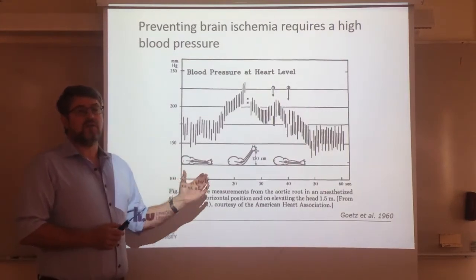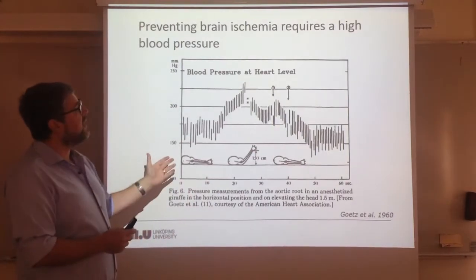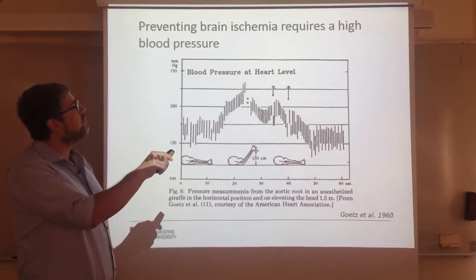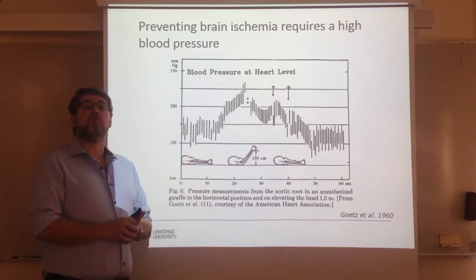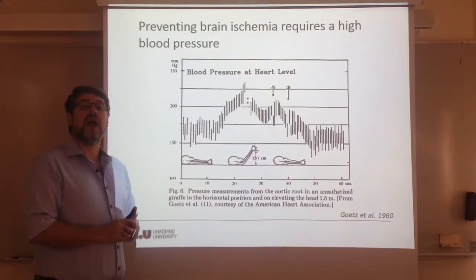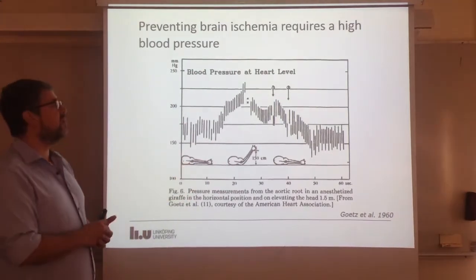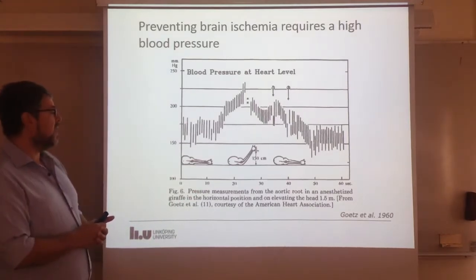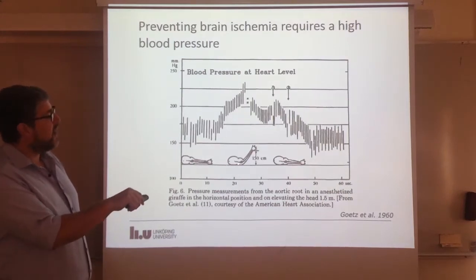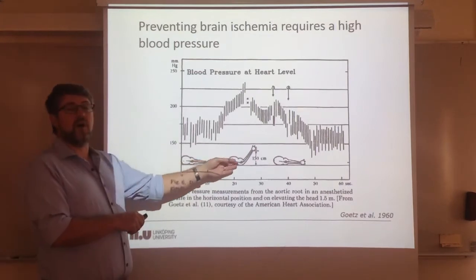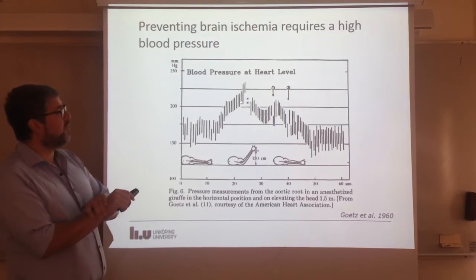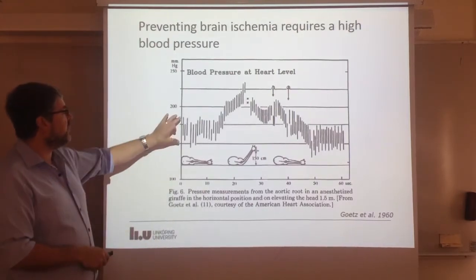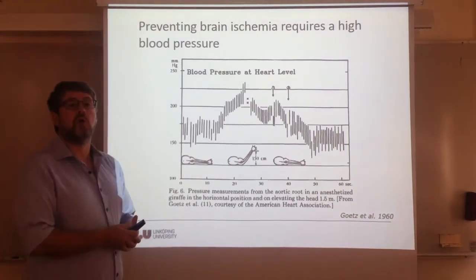Essentially, the discovery here is that knowing the effects of gravity, if brain ischemia has to be prevented, we need a high perfusion pressure. That would mean that the central blood pressure of a giraffe has to be substantially higher in order to feed the brain with blood. The first measurements done in giraffes — in anesthetized animals in laying positions, then elevating the head and imposing gravitational effects — showed very clearly that blood pressure is relatively high and increases further when the head is elevated. These numbers are considerably higher than what would be normal for most mammalian species.